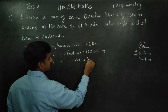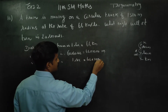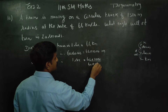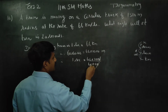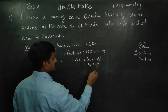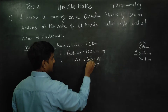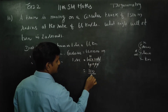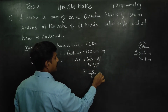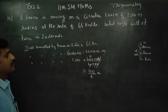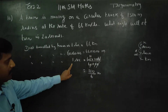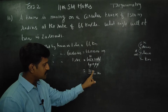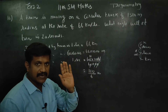Distance per second equals 66 into 1000 divided by 60 into 60. Cancel the zeros and simplify: 6 cancels 11 times, giving us 110 by 6 meters. The train travels 110 by 6 meters in 1 second.